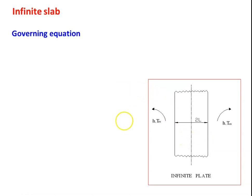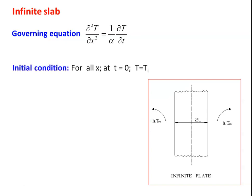The governing equation for the slab is ∂²T/∂x² = (1/α)(∂T/∂t). This is the one-dimensional unsteady state heat transfer equation. The initial condition: for all values of x within the solid, at time t equal to 0, the temperature is T_i, the initial temperature.